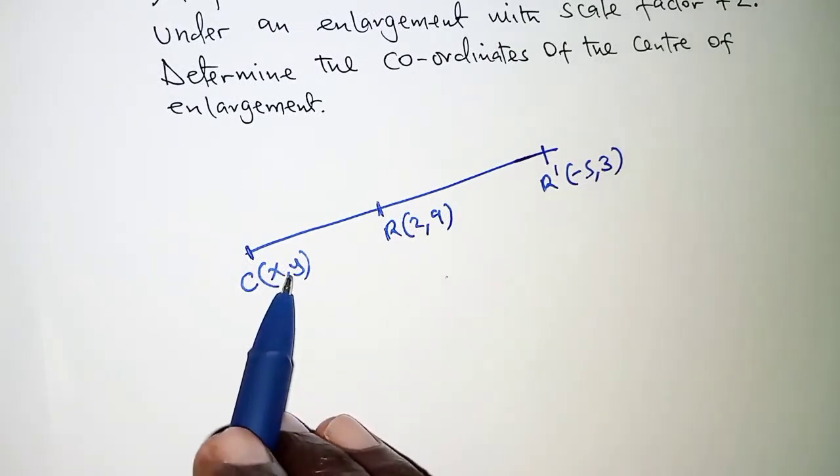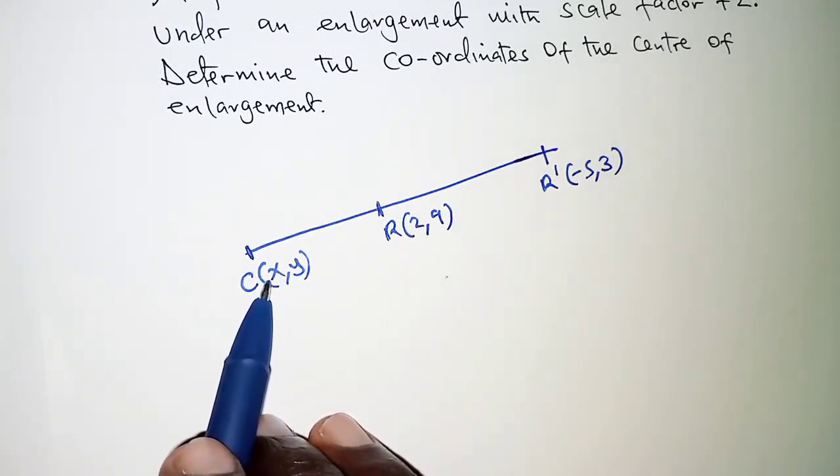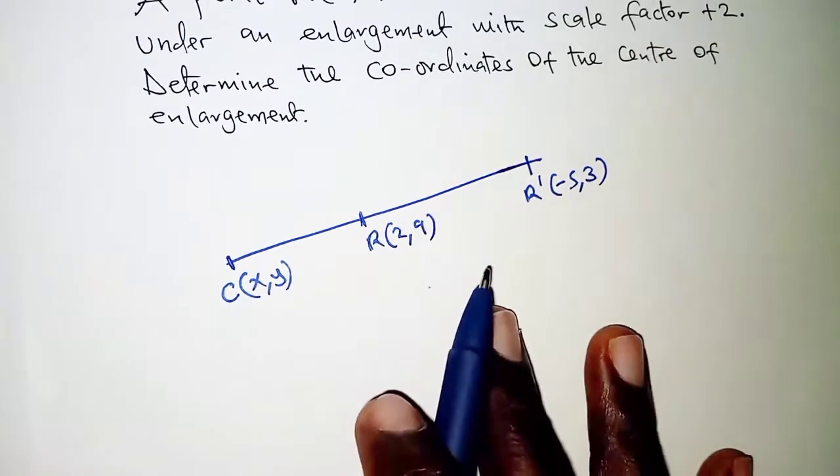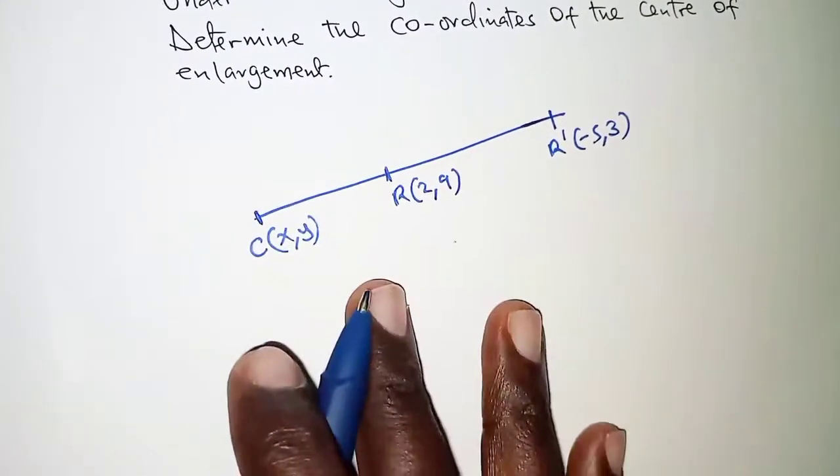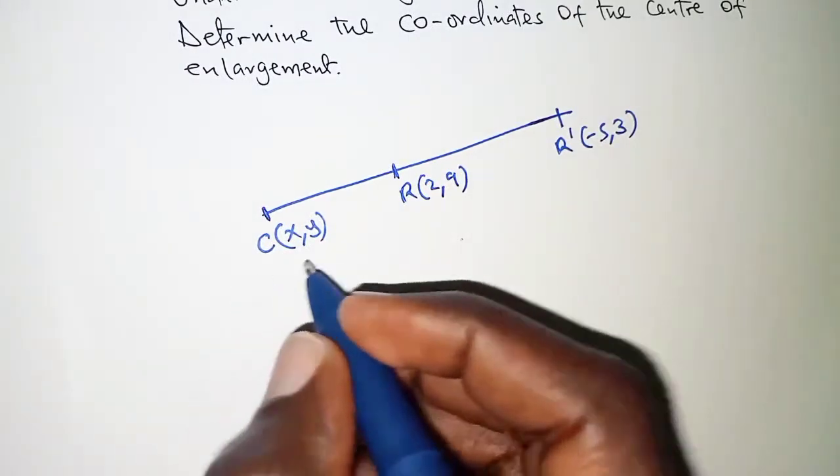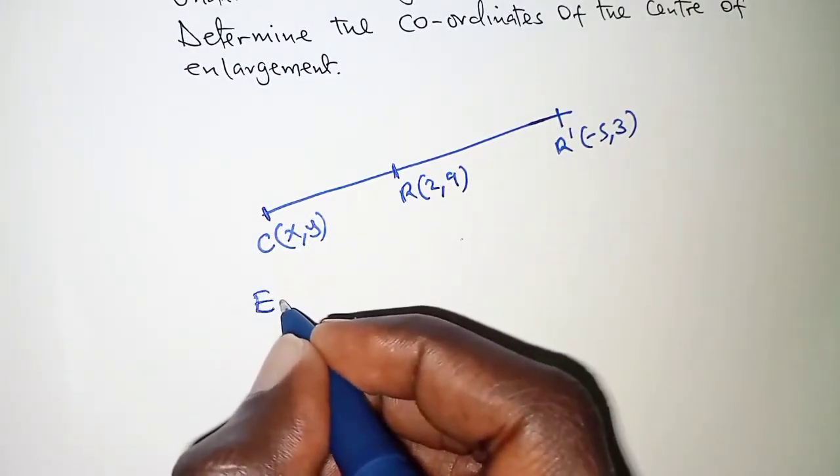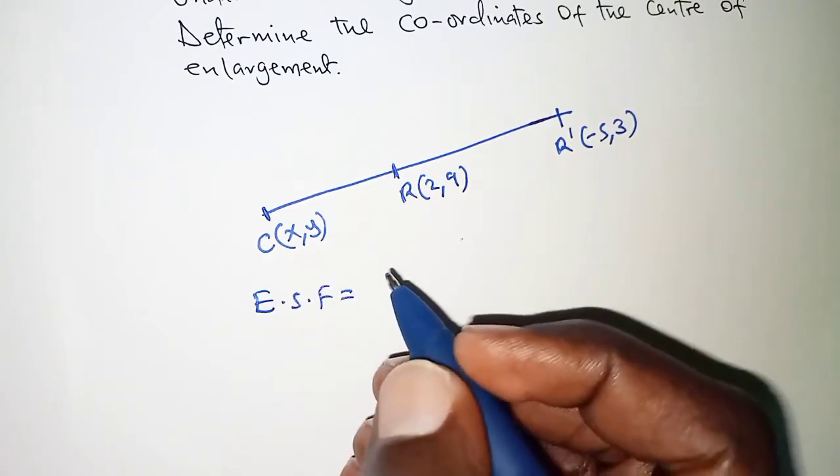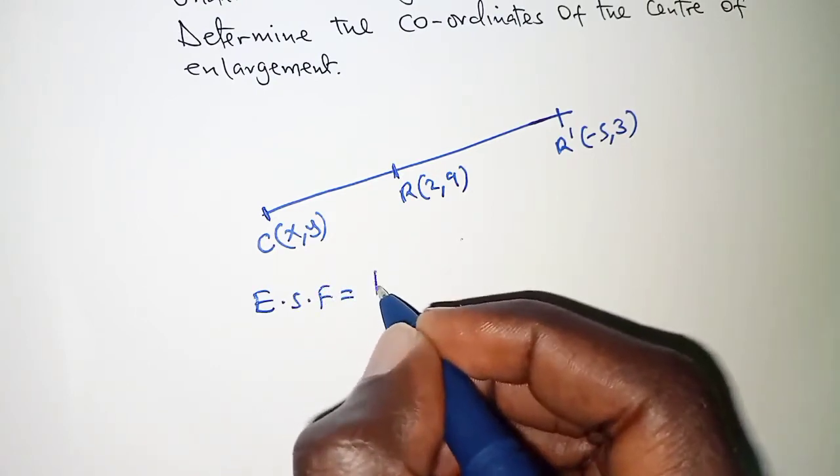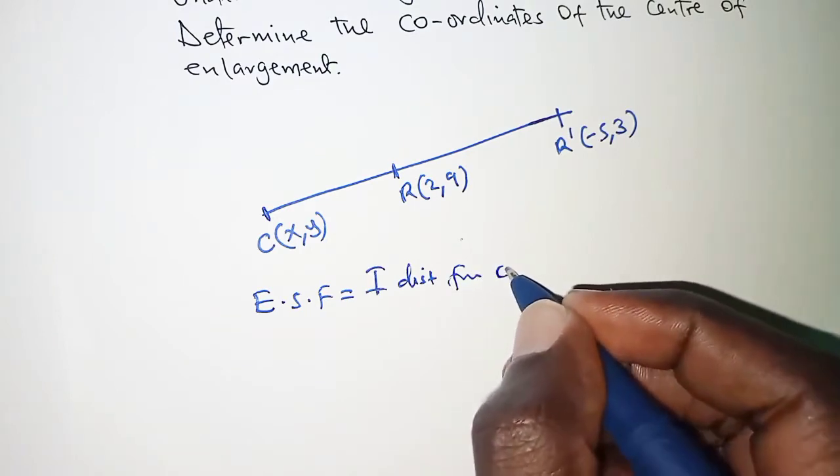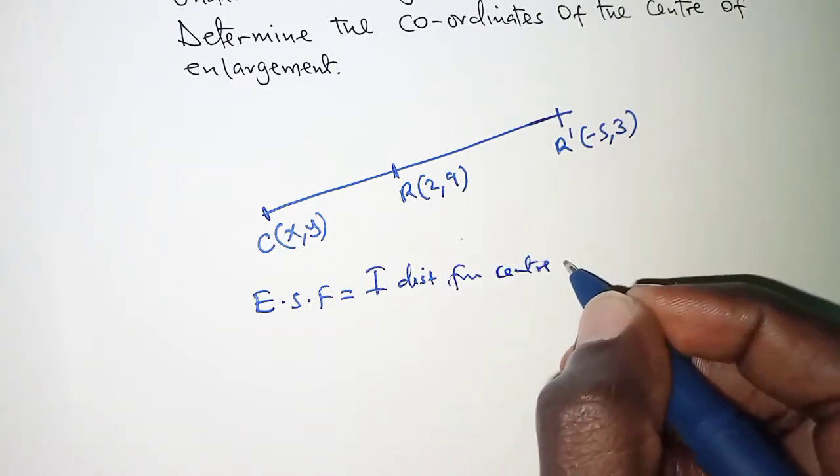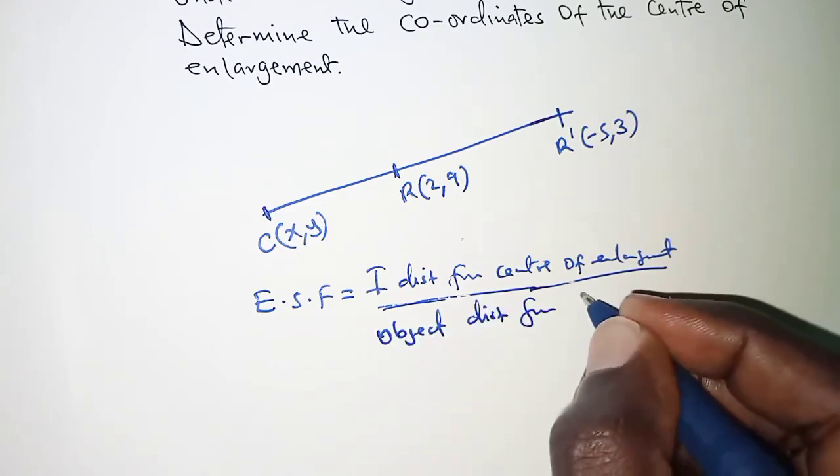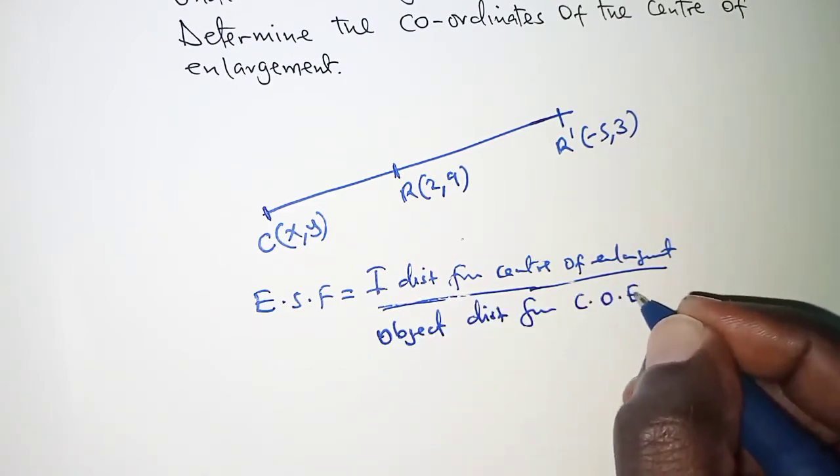Let's begin by determining the X coordinate. For us to determine the X coordinate, we are going to consider the following. We have enlargement scale factor is usually equivalent to image distance from center of enlargement over object distance from center of enlargement.